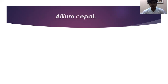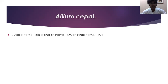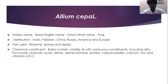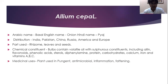The second plant is Allium cepa. Arabic name: Basal. English name: Onion. Hindi name: Piaz. Distribution: cultivated in India, Pakistan, China, Russia, America, and Europe. Parts used: rhizomes, leaves, and seeds. Chemical constituents: contains volatile oil with sulfurous constituents including alliin, flavonoids, phenolic acid, sterols, diphenyl amine, protein, carbohydrates, calcium, iron, and vitamins A, B, C. Medicinal uses: plant used in pungent, antimicrobial, inflammation, and flatulence.